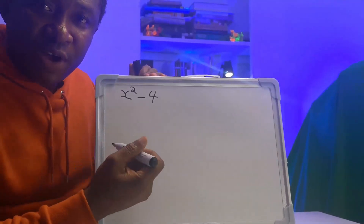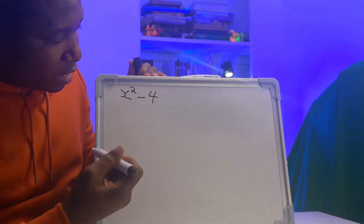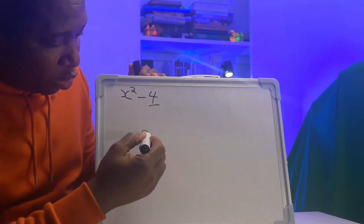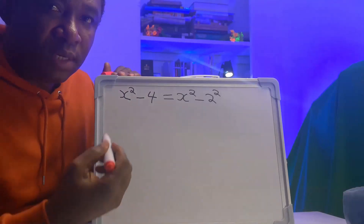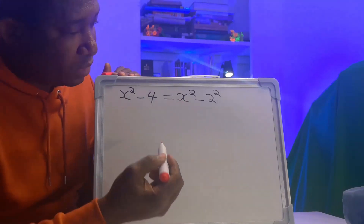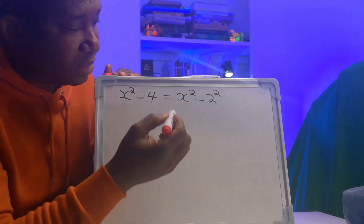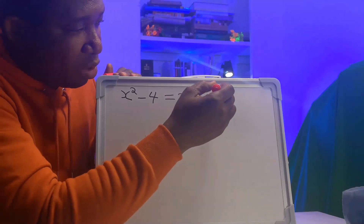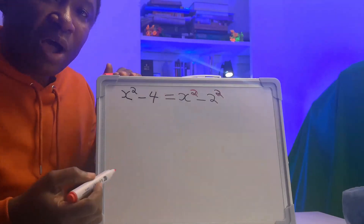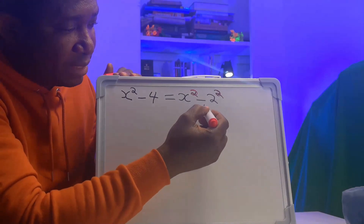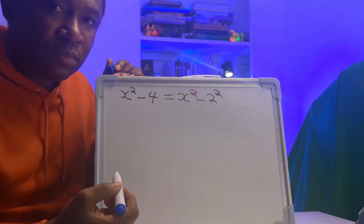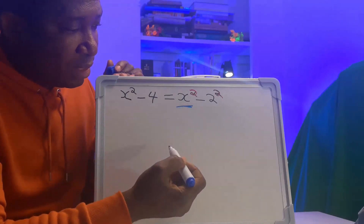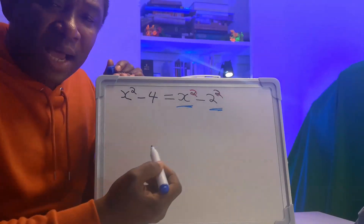Let's evaluate this question: x squared minus 4. The number 4 can become 2 squared. This is now difference of two squares. In difference of two squares, one variable will have a square and the other variable will also have a square, and both will be separated by a minus.